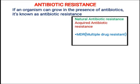اگر ایک بیکٹیریا کو kill کرنے کے لیے ہم five classes of antibiotics use کرتے ہیں، اور وہ بیکٹیریا ان five classes میں سے کسی دو یا دو سے زیادہ classes کو resistant ہو جاتا ہے، then it is known as MDR — multiple drug resistant bacteria.